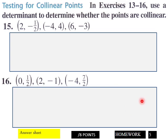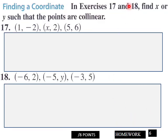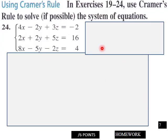Page six, find x or y such that the points are collinear for these, 17 and 18. You've got eight points here, page six. And then page seven, use Cramer's rule for this system of equations. That is page seven.